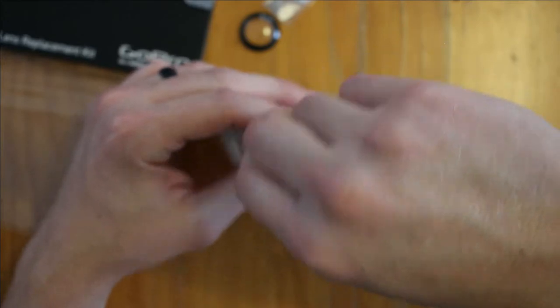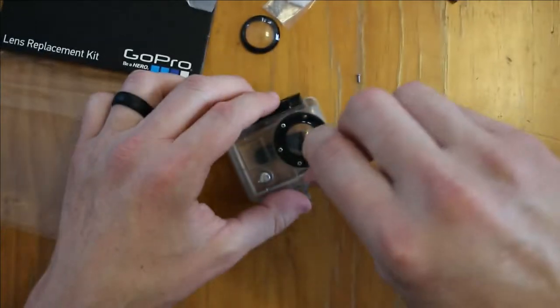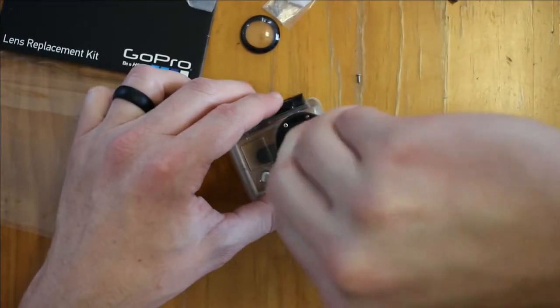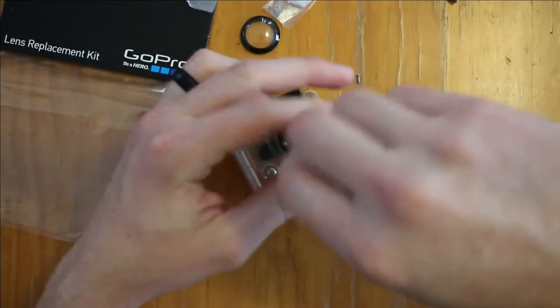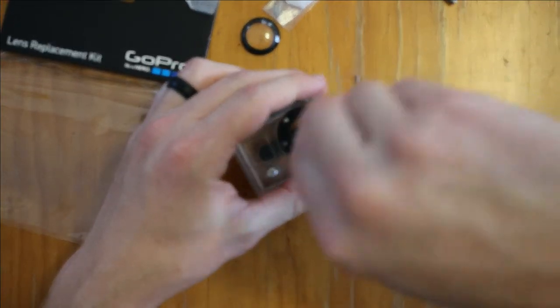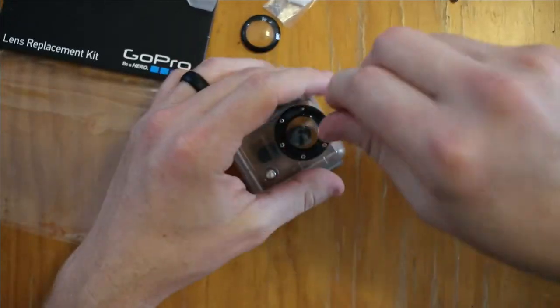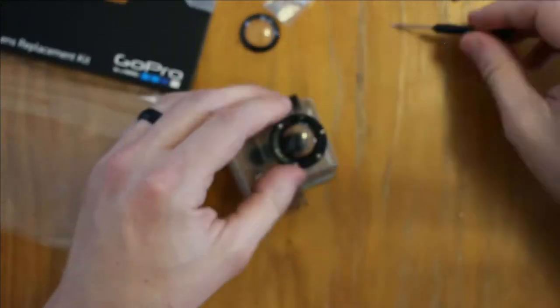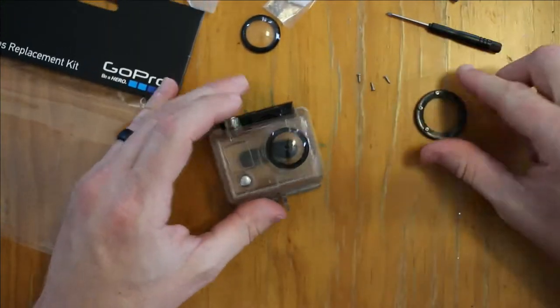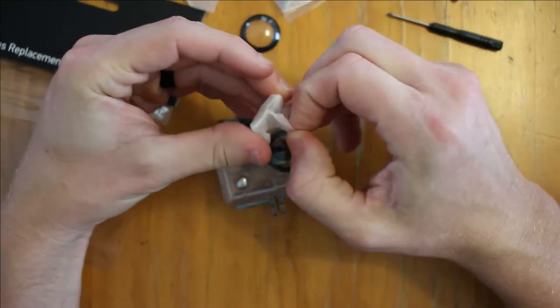So the repair kit comes with a screwdriver, two lenses, and some extra screws. I think I just reused the extra screws that I had. And then this one's still nice and sealed up.